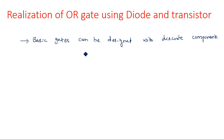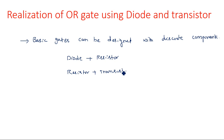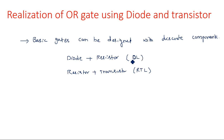If we are using a diode plus resistor, that configuration is called diode logic. If we are using resistor plus transistor, that is called RTL — resistor transistor logic. If you are using a diode alone, that is diode logic. Diode plus resistor also falls under this diode logic configuration.